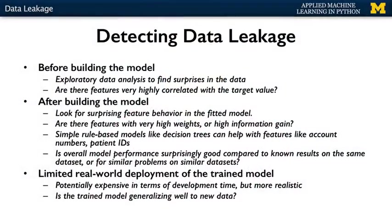So how can you detect and avoid data leakage in your applications? Before building the model, exploratory data analysis can reveal surprises in the data — for example, look for features very highly correlated with the target label or value. An example from the medical diagnostic case might be the binary feature that indicated a patient had a particular surgical procedure for the condition, which might be extremely highly correlated with a particular diagnosis. After building the model, look for surprising feature behavior in the fitted model, such as extremely high feature weights or very high information gain associated with a variable.